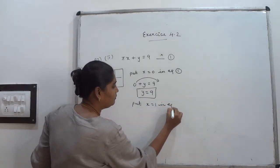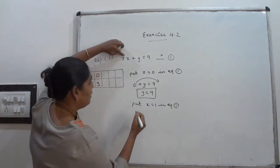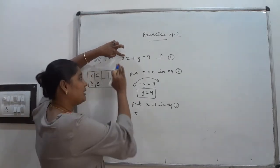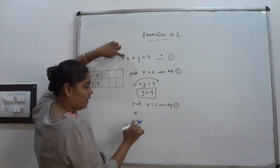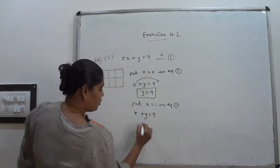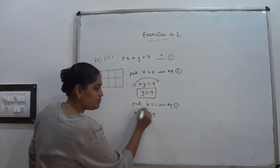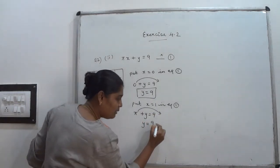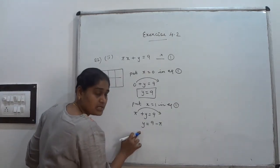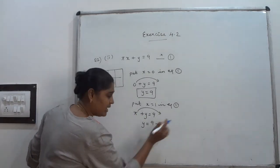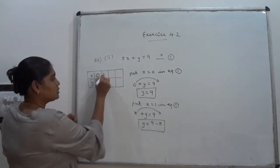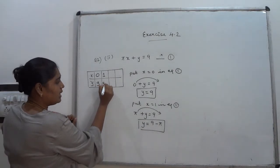Put x = 1 in equation number 1. π × 1 = π, so π + y = 9. Moving π to the other side: y = 9 − π. When x = 1, y = 9 − π.